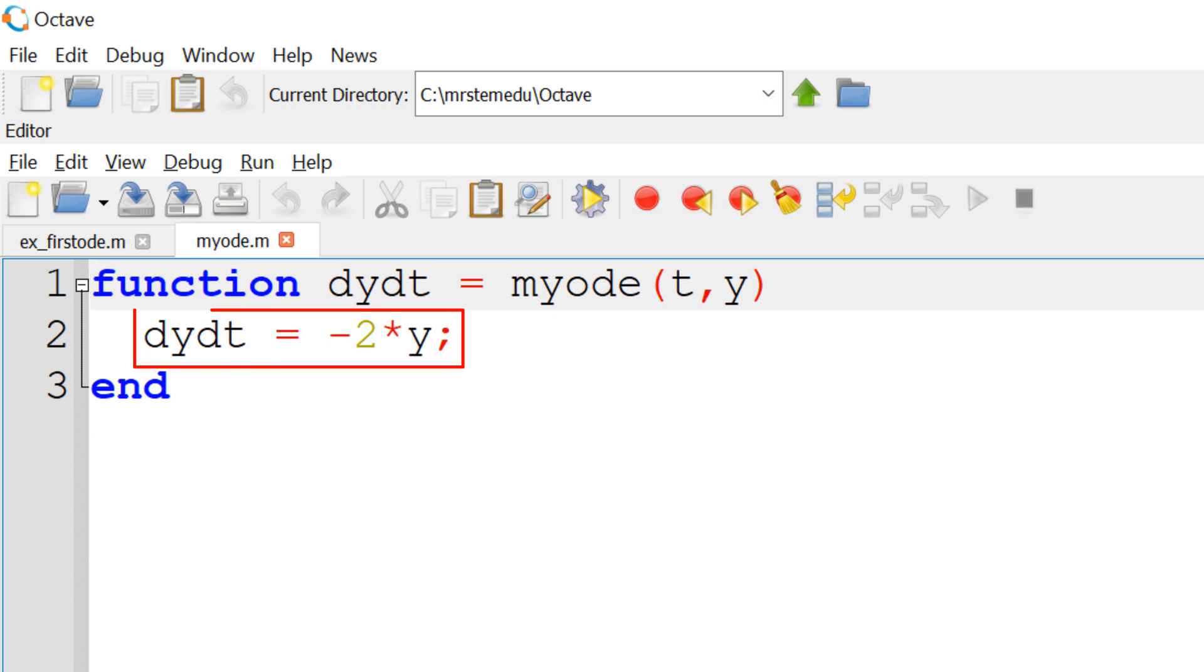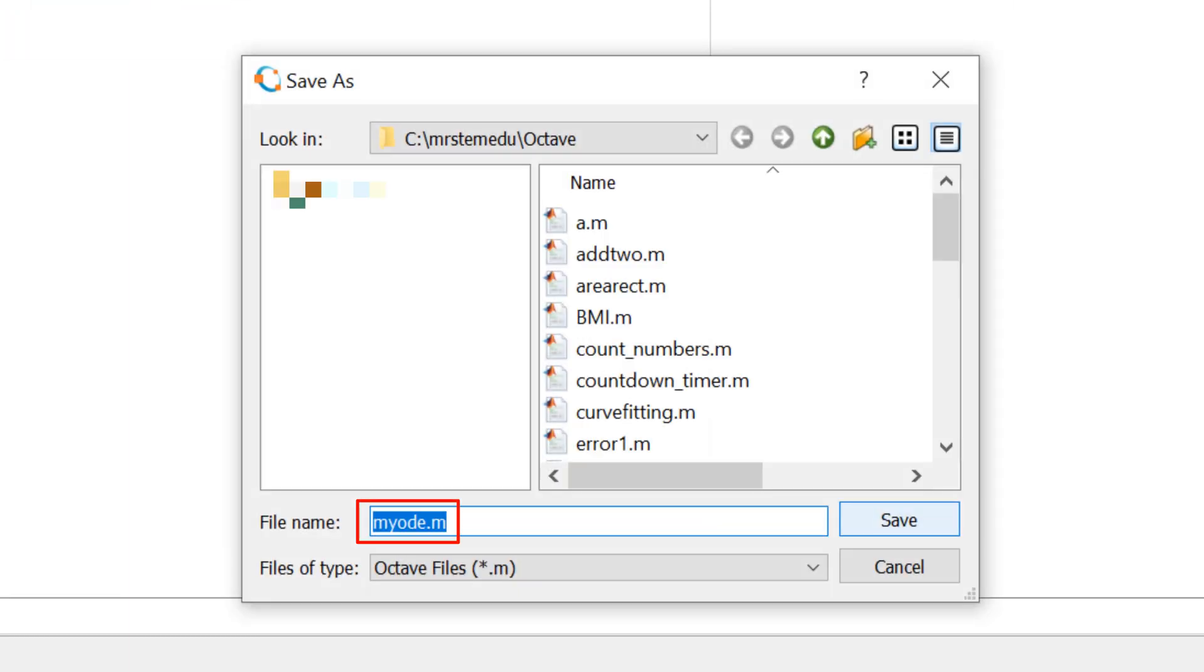myODE is dy over dt equals minus 2y. So I typed accordingly. Then I wrap up with end at the end. Save this script as the same function name, myODE.m, under the same working directory. So ODE45 function will call myODE without having a problem.